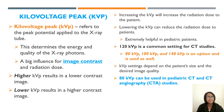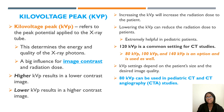Now we'll talk about kVp, or kilovoltage peak. This refers to the peak potential applied to the x-ray tube and determines the energy and quality of the x-ray photons — it is a big influence on image contrast and radiation dose. Higher kVp results in a lower contrast image; lower kVp results in a higher contrast image. Increasing the kVp will increase the radiation dose to the patient. Lowering the kVp can reduce the radiation dose to the patient.